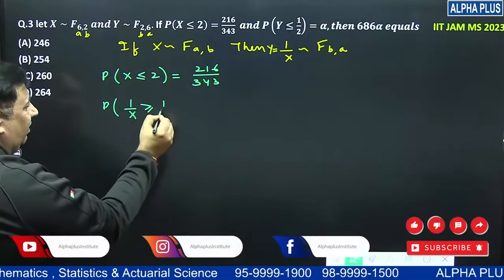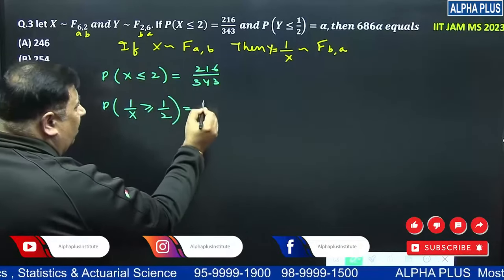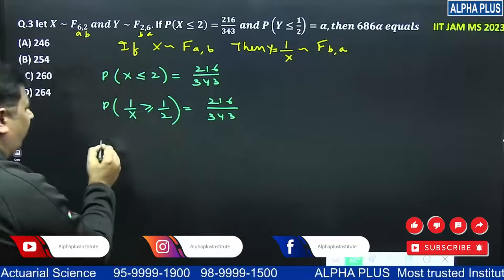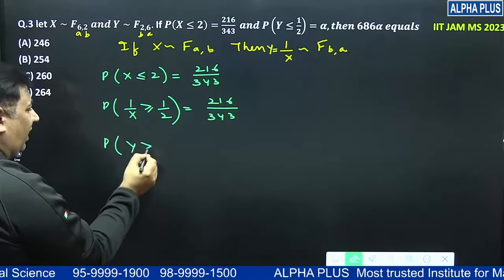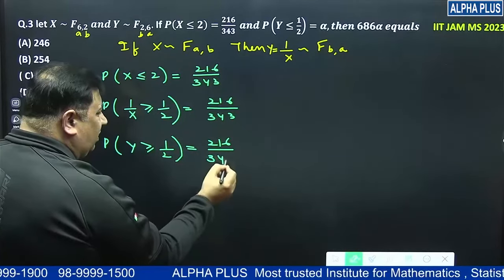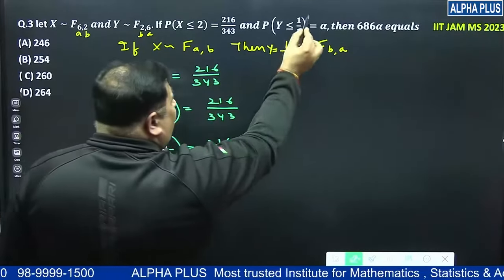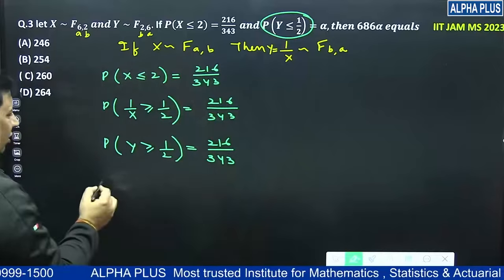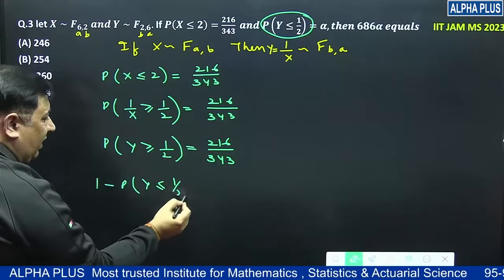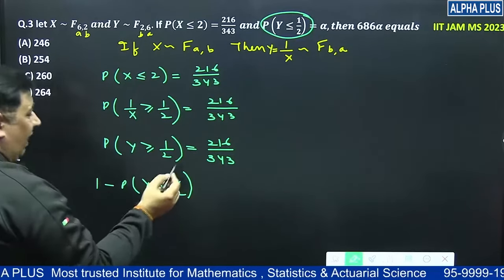1 by X is greater than equal to 1 by 2 students, which is 216 upon 343. And 1 by X as I said right now is Y, which is 1 by 2 again, which is 216 upon 343 students. And we need Y less than equal to 2. So can we write 1 minus probability Y less than equal to 1 by 2. F is continuous, so equal to sign doesn't matter. It's not affecting our LHS paper.